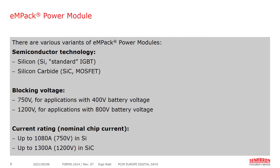There are different variants of the MPEG Power Modules. Regarding semiconductor technology, it is available in silicon or silicon carbide. Regarding blocking voltage, we offer 750V — good for applications with a battery voltage of up to 400V — and 1200V, which is good for applications with a battery voltage of 800V. Regarding the nominal chip current, we range up to 1080A in 750V silicon and up to 1300A in 1200V silicon carbide.